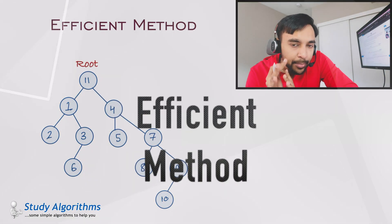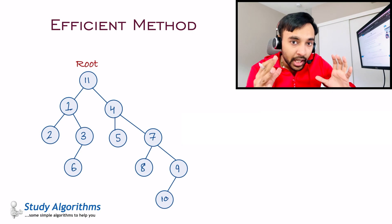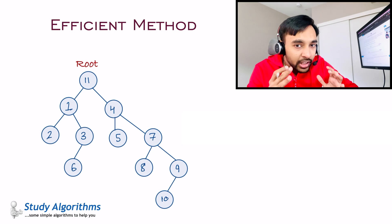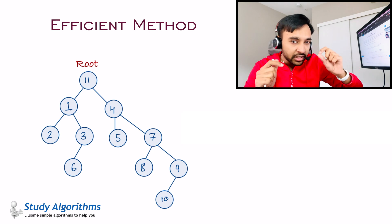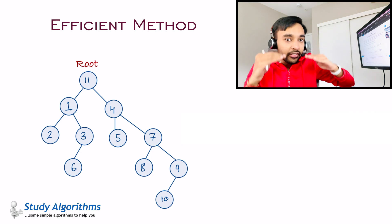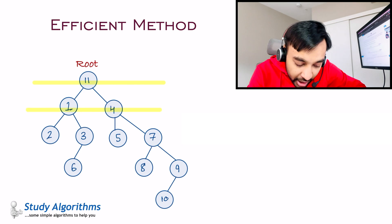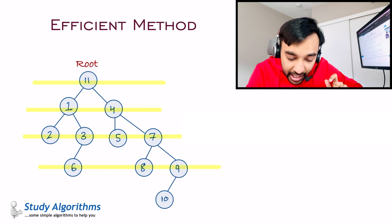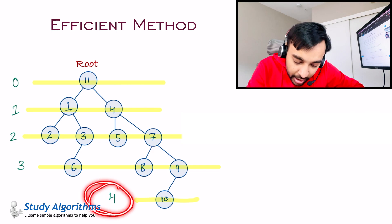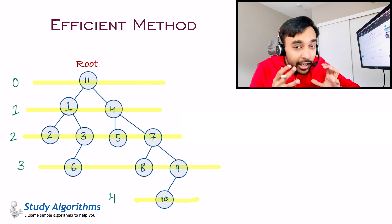Let us take our same example once again and try to find an efficient solution. When you are trying to find efficient solutions to a problem, think outside the box. You have to find out the height of a binary tree, and from all the examples we just saw, the height of a binary tree just looks like the levels in a binary tree. If your deepest node is at height 7, then you can also see that there are 7 levels in the binary tree. So root is at level 0, 1 and 4 are at level 1, nodes 2, 3, 5, 7 are at level 2, nodes 6, 8, 9 are at level 3, and ultimately 10 is at level 4.